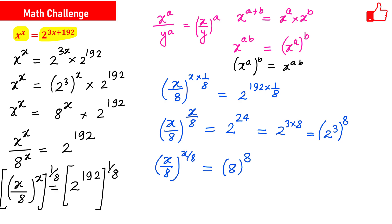So we have x over 8 raised to the power x over 8 equals 8 raised to the power 8. Comparing both sides, the base and exponent are the same structure: x over 8 is both the base and the exponent on the left, and 8 is both the base and exponent on the right. Therefore x over 8 equals 8, which means x equals 64.